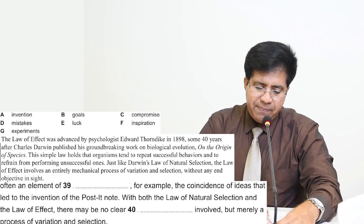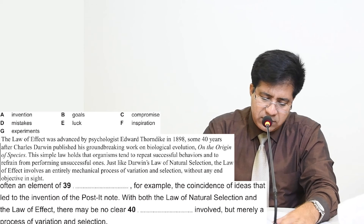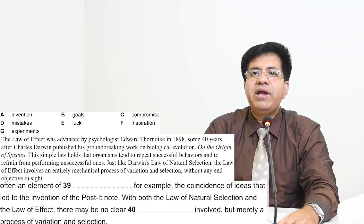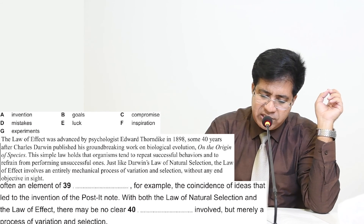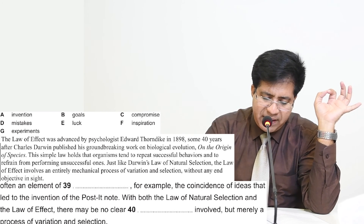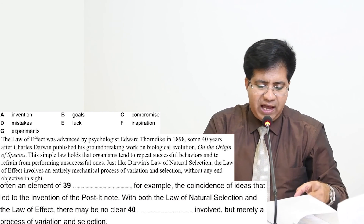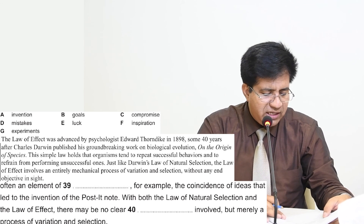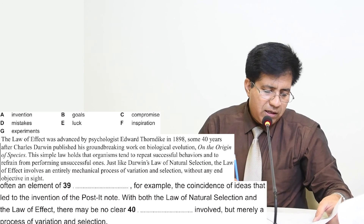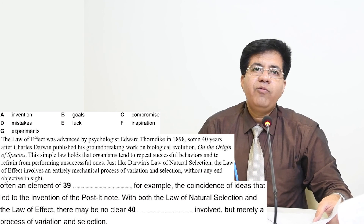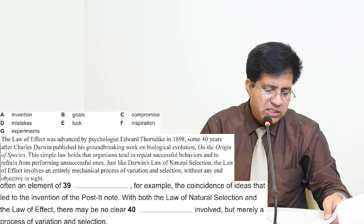Please come to the third last paragraph, third last line: 'Just like Darwin's law of natural selection, the law of effect involves an entirely mechanical process of variation and selection without any end objective in sight.' For 'no clear dash,' they say 'no end objective in sight.' End objective is your goal. So goal is option B — the correct answer for question 40 is B.